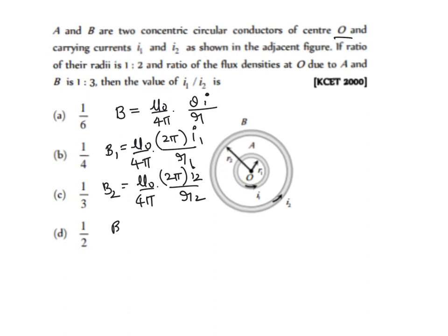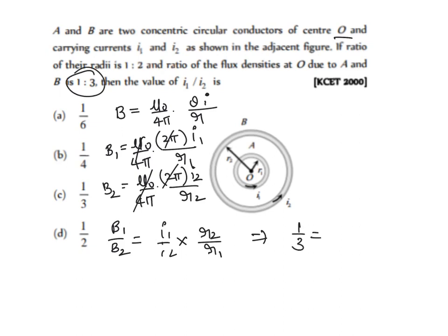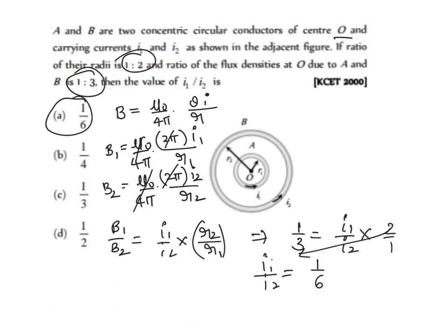Taking the ratio B1/B2, the μ₀/4π and 2π terms cancel, leaving (I1/I2) × (R2/R1). Since B1/B2 = 1/3 and R2/R1 = 2/1, we get 1/3 = (I1/I2) × 2, so I1/I2 = 1/6. Option A is the right answer.